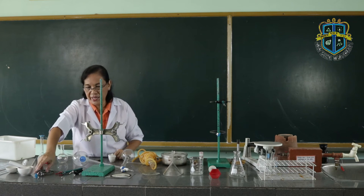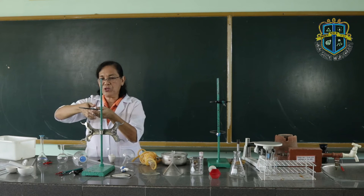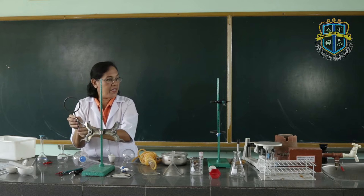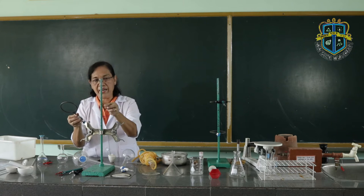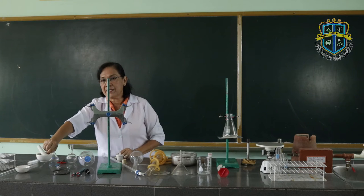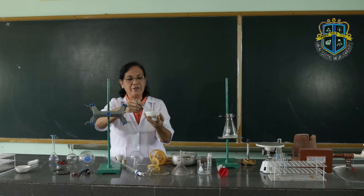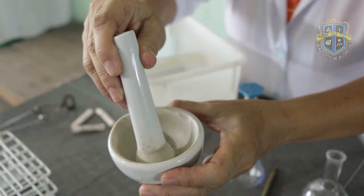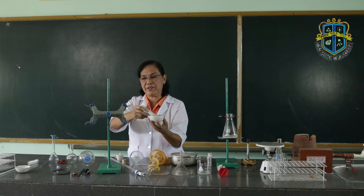Next, we have the iron ring. The iron ring supports a container when heating, and it is also supported by the iron stand. Then we have the mortar and pestle. The mortar and pestle is used for grinding purposes — to convert larger particles into smaller, finer ones.